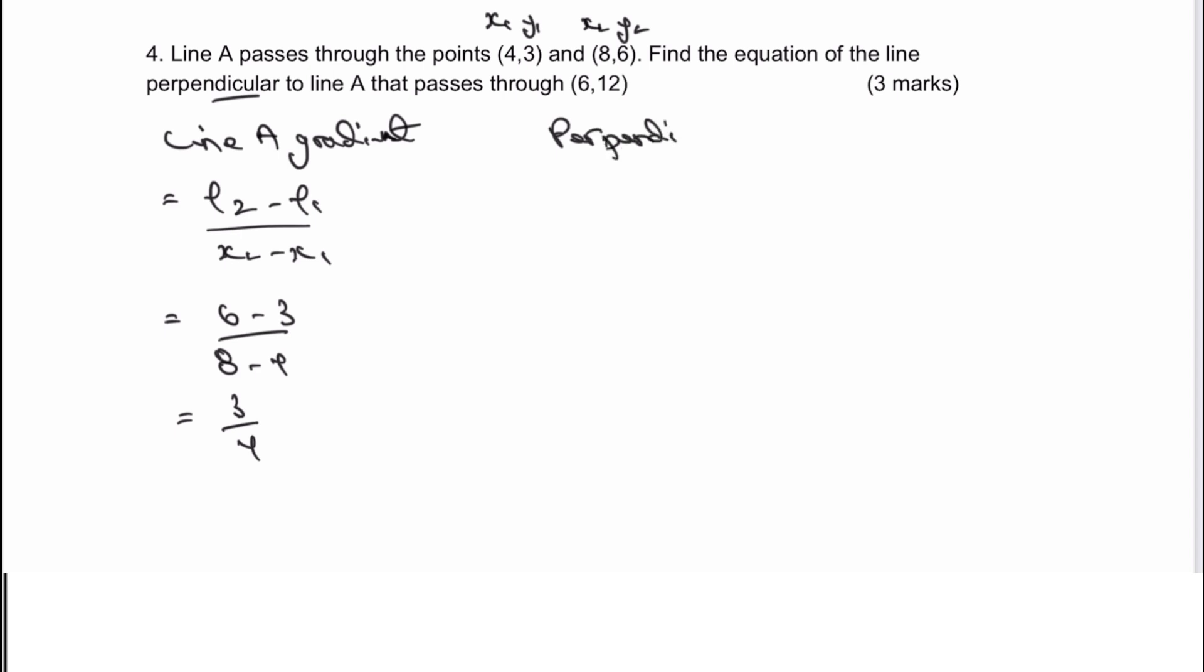So the perpendicular line is going to have a gradient of minus 4 over 3. It's the negative reciprocal of line A. And that's going to be x plus c.